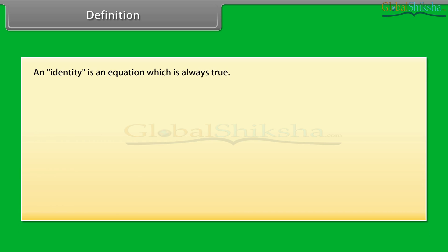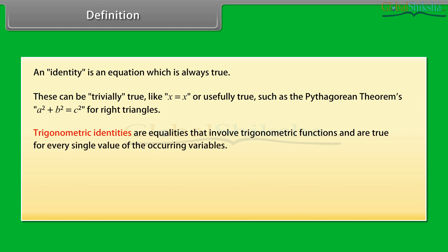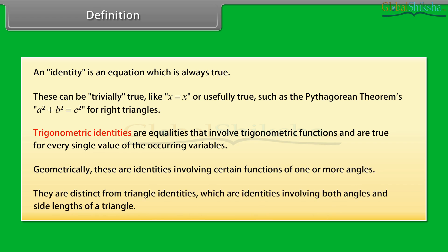Definition: An identity is an equation which is always true. These can be trivially true like X is equal to X, or usefully true such as the Pythagorean theorem: A square plus B square is equal to C square for right triangles. Trigonometric identities are equalities that involve trigonometric functions and are true for every single value of the occurring variables. Geometrically, these are identities involving certain functions of one or more angles. They are distinct from triangle identities, which are identities involving both angles and side lengths of a triangle.